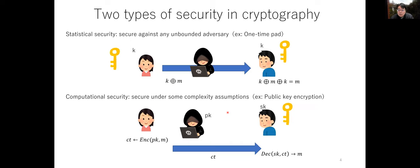In cryptography, we have two different types of security definitions. Statistical security means security against any unbounded adversary — for example, the one-time pad, where the ciphertext is completely random from the adversary's viewpoint and secure against any computationally unbounded adversary. Computational security means security is guaranteed under some complexity assumption, like factoring is hard or LWE is hard. For example, public key encryption, where security is guaranteed only against computationally bounded adversaries.